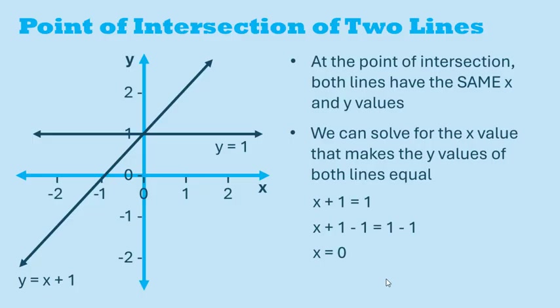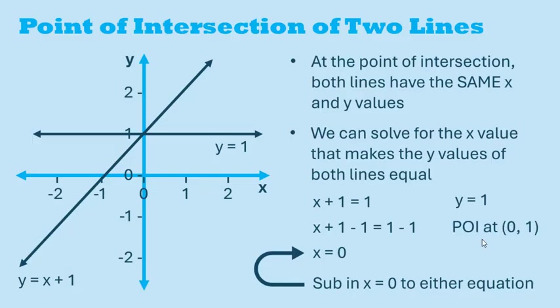To find the y value of the point of intersection, we can plug in x equals 0 into the equation of either of these lines. In this example, things are a little bit easier, because we have a line that's just y equals 1. So y does not depend on x. In this case, y always equals 1, regardless of what x equals. So we know that the y value of the point of intersection must be 1. Therefore, the point of intersection is at (0, 1).